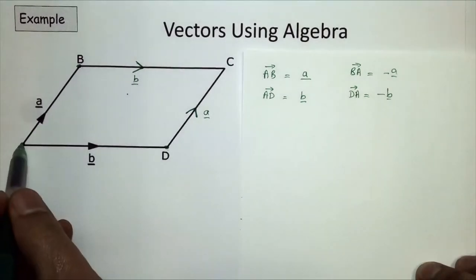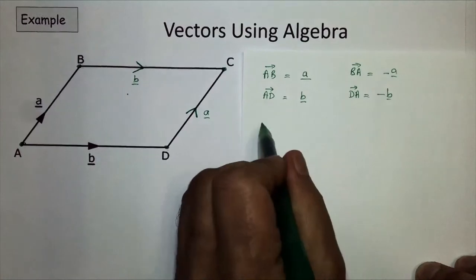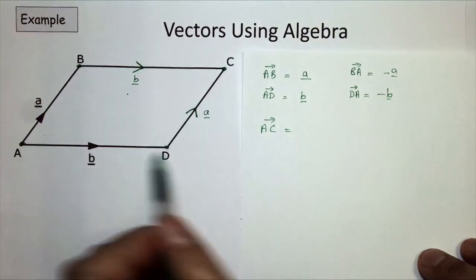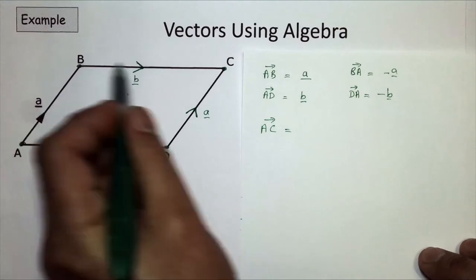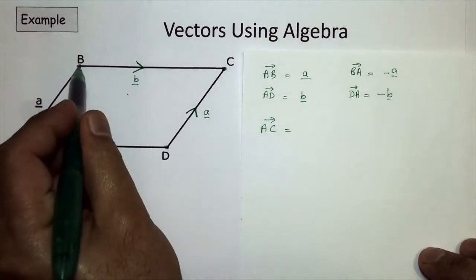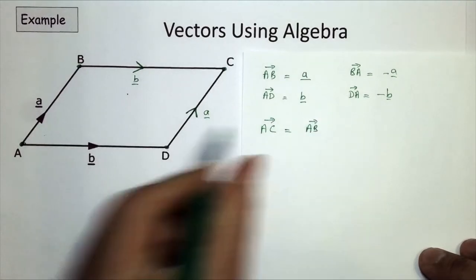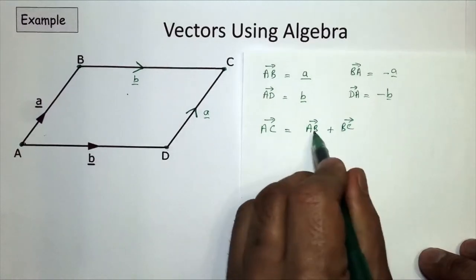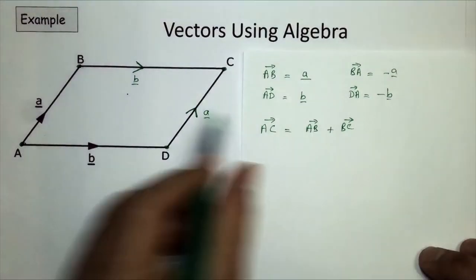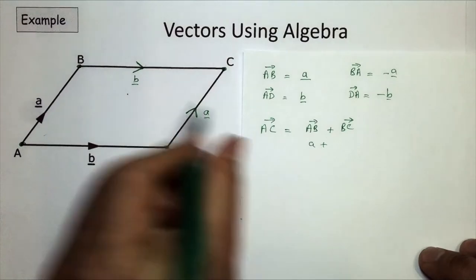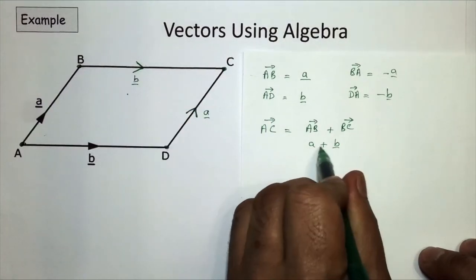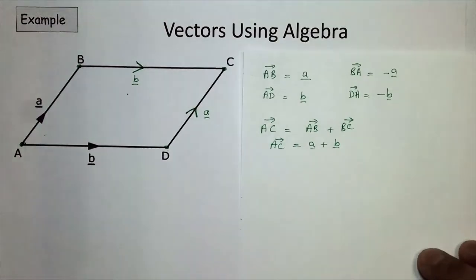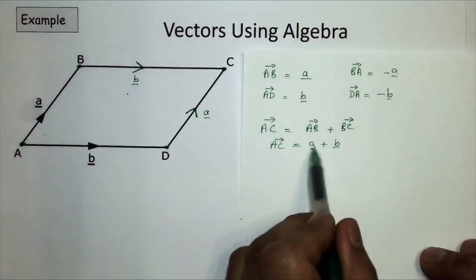Now, if I'm traveling from A to C, I need to look at the path I'm going to take because there's no direct path from A to C. So I'll follow the path above: going from A to B first, and then from B to C, which takes me from A to C. The vector for A to B is a, and the vector from B to C is b, so A to C is equal to a plus b. That's the resultant vector for A to C.